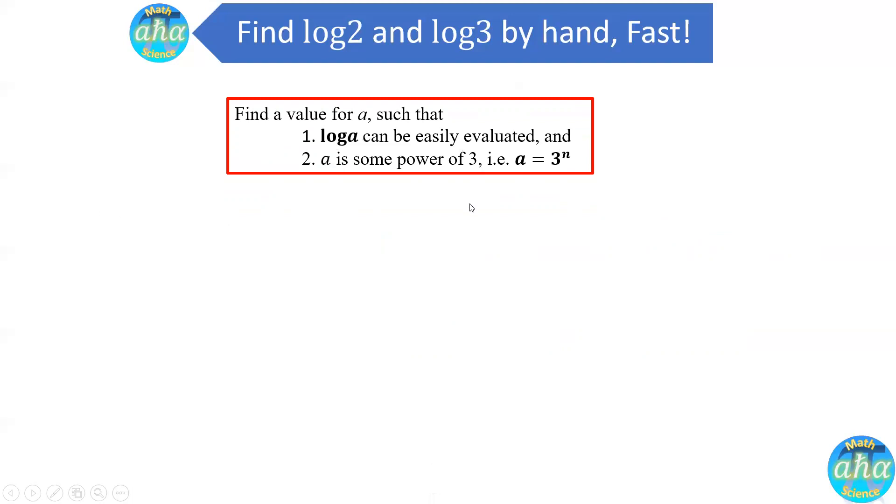So now let's take a look at powers of 3. 3 to the 1 is just 3. 3 to the power 2 is 9. 3 to the power 3 is 27. And 3 to the power 4 is 81. And 3 to the 5 is 243.